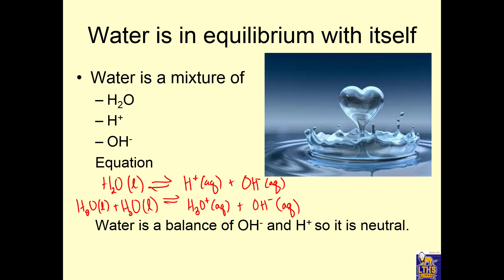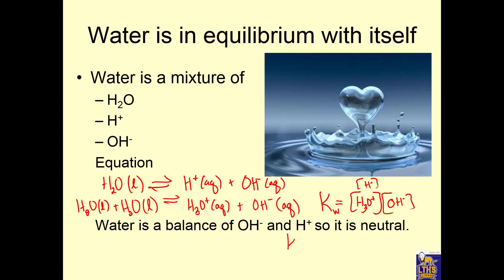Water is neutral because the amount of hydrogen ion and hydroxide ion equals each other. We can write what's called an equilibrium constant for water. We put the products H₃O⁺ or H⁺ times the other product OH⁻ over the reactants, but notice the reactants are liquid. So this is called KW, the equilibrium constant for water, and it's 1 times 10 to the negative 14.